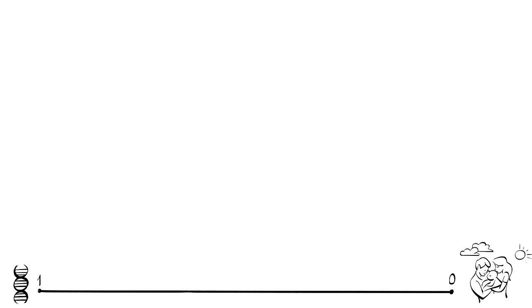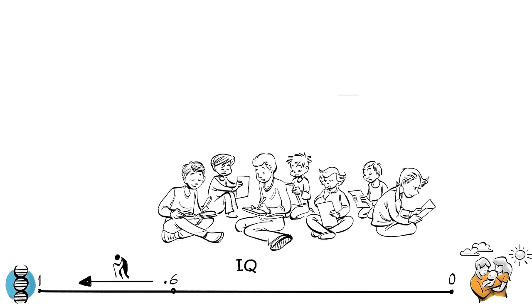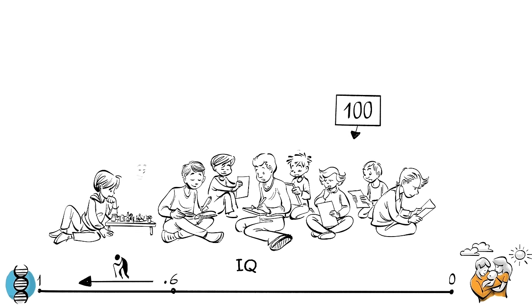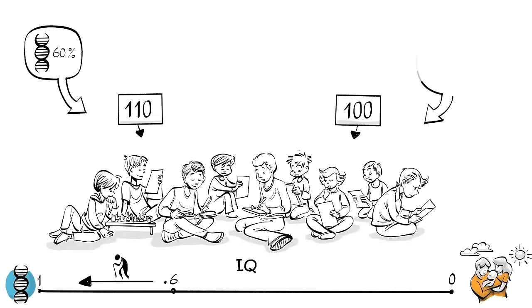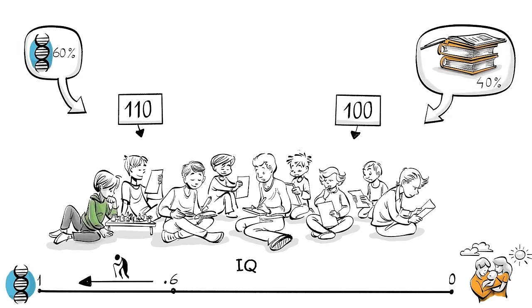The heritability of IQ is around 0.6 for people in their 20s and then increases as we age. The average IQ in our group will be around 100, but some have an IQ of 110. Genes are therefore responsible for 60% of the difference and random factors in the environment for about 40%. In other words, for those with an IQ of 110, 6 of the additional 10 points can, on average, be attributed to nature and 4 points to nurture.